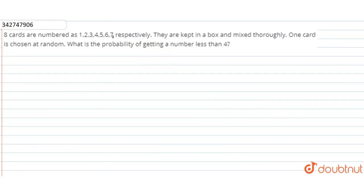The question says, 8 cards are numbered as 1, 2, 3, 4, 5, 6, 7 and 8 respectively. They are kept in a box and mixed thoroughly. One card is chosen at random. What is the probability of getting a number less than 4?